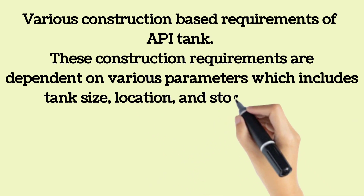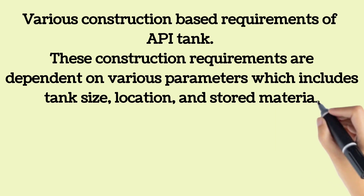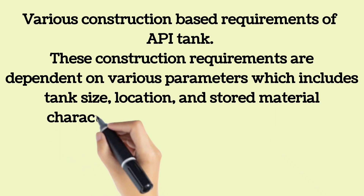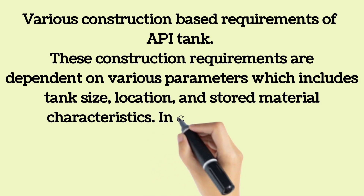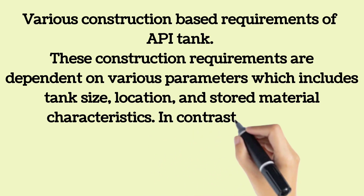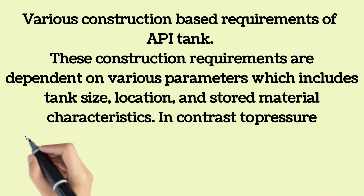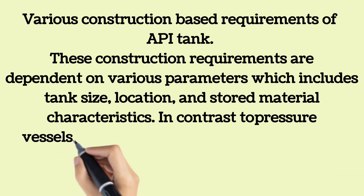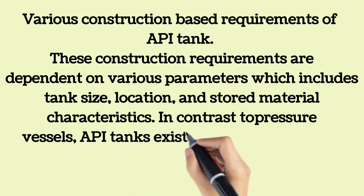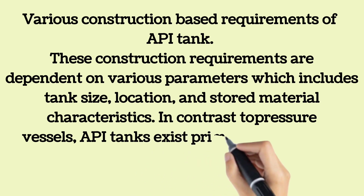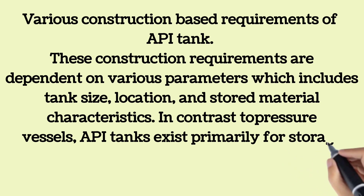API tanks typically store oil, gasoline, and chemicals, but may hold any other type of liquid such as water. Certain process media may require the application of an internal coating. In contrast to ASME pressure vessels, which primarily exist for processing, API tanks exist primarily for storage purposes.